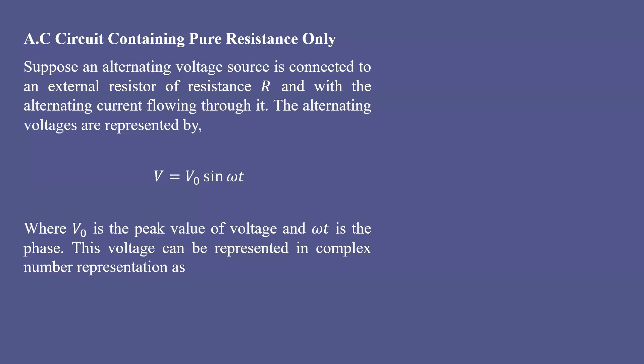In today's class, we will take up AC circuits containing a pure resistor, capacitor, and inductor separately. We will consider what happens to the phase between current and voltage — what the phase difference between current and voltage will be in these circuits. Let us take the first case: an AC circuit containing a pure resistance only.